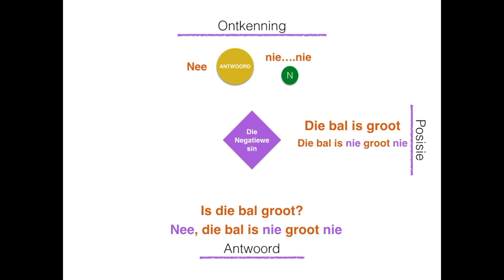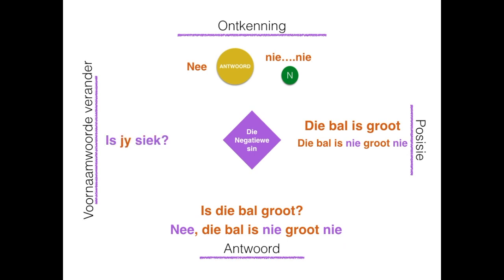You also have the voornaamwoorde — the pronouns — that change. You will learn more about this in later stages. For example: 'is jy siek nie?' — 'ek is nie siek nie'. The 'jy' changes to 'ek' in the answer. Another example: 'die bal is groot' becomes 'die bal is nie groot nie'. That is basically it.